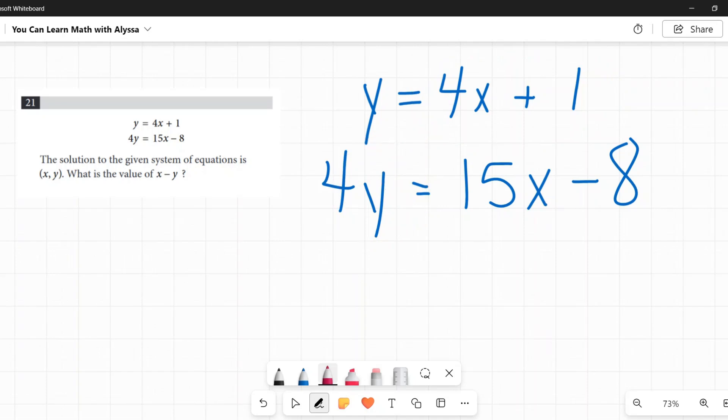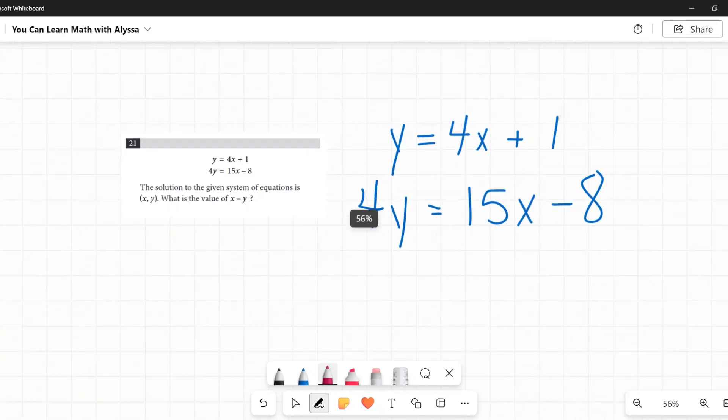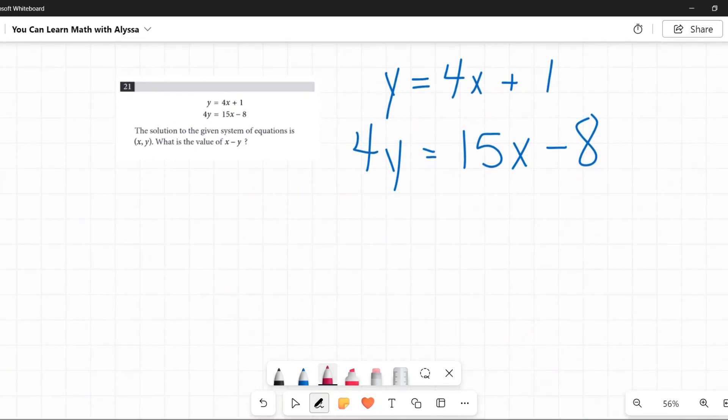My preferred method tends to be elimination because if I do the 4x plus 1 in there you get the binomial. Either way works. I'm actually, you know what, I'm going to show you both and then you can decide what you want to do. I'm giving you choices, right?